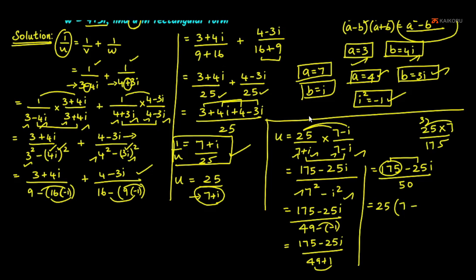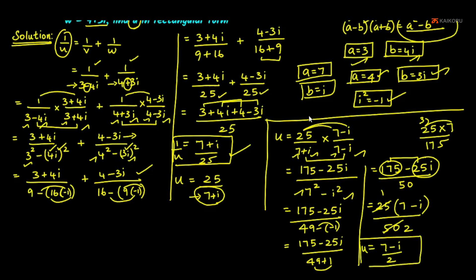Simplifying: (175 minus 25i) divided by 50. Dividing numerator and denominator by 25, we get (7 minus i) divided by 2. So U equals (7 minus i)/2.